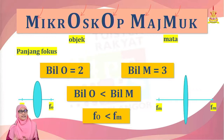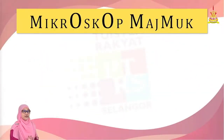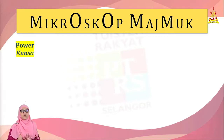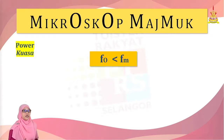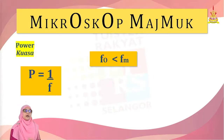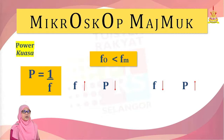Ciri-ciri yang berikutnya adalah power atau kuasa. Kita tahu bahawa panjang fokus bagi kanta objek adalah lebih rendah daripada panjang fokus bagi kanta mata. Panjang fokus berkaitan dengan power: P = 1/f. Bila panjang fokusnya tinggi, maka powernya adalah rendah. Bila panjang fokusnya rendah, maka powernya adalah tinggi.